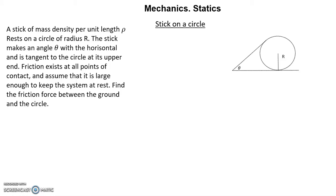The stick makes an angle θ with the horizontal and is tangent to the circle at its upper end. Friction exists at all points of contact and assumes that it is large enough to keep the system at rest.